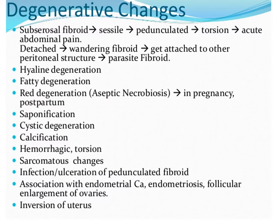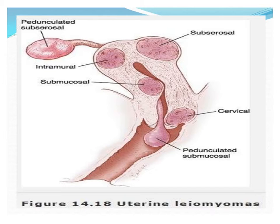Sarcoma itself comes under the heading of malignant uterine tumors. There is also another type of sarcoma that arises independent of any fibroid. Infection or ulceration of a pedunculated fibroid or fibroid polyp can occur, and sometimes fibroids can be associated with endometrial carcinoma. Whenever we find a polyp inside the endometrial cavity, we must go for endometrial sampling to rule out endometrial carcinoma. Inversion of the uterus can also occur if the fibroid attached at the fundal area creates pressure that inverts the uterine cavity.